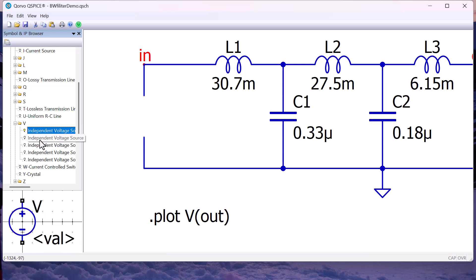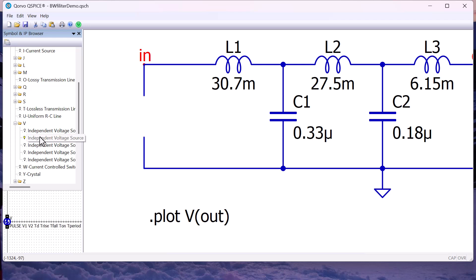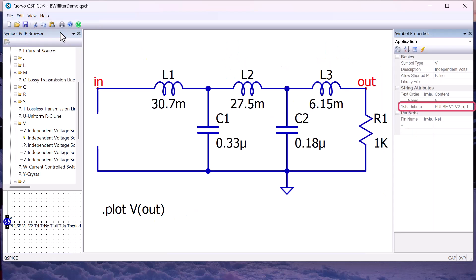The labels are the same, they all say independent voltage source, but we can see at the bottom of the GUI what type of source each one is. We can also see the source type in symbol properties.